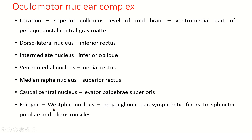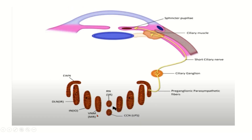The Edinger-Westphal nucleus gives preganglionic parasympathetic fibers to the sphincter pupillae and ciliaris muscle. You can see here the ventromedial nucleus, intermediate nucleus, and dorsolateral nucleus, and the Edinger-Westphal nucleus in relation to the dorsolateral nucleus.